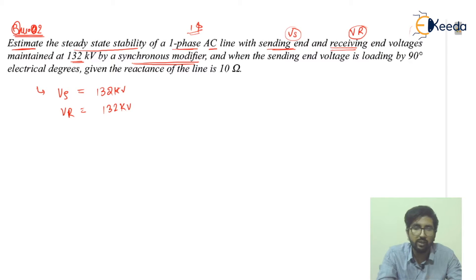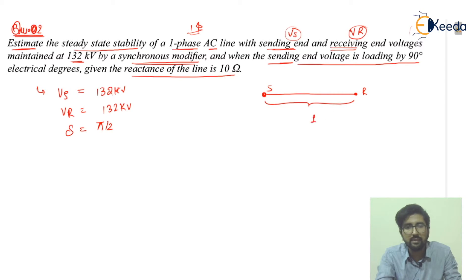So the voltage drop is maintained constant when the sending end voltage is loading by 90 degrees electrical. So I can write that delta is equal to 90 degrees or you can say pi by 2. The reactance of the transmission line from the sending end to the receiving end is given as 10 ohms total.